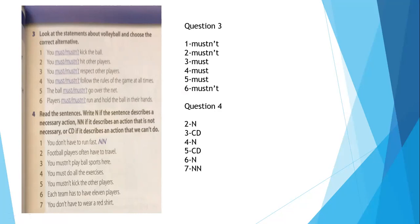If you play the ball wrong, you'll lose a point. The ball must go over the net. Players must not run and hold the ball in their hands. So these are the rules about volleyball.